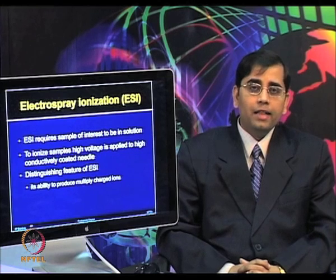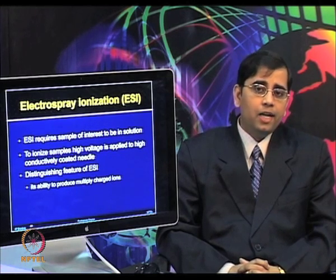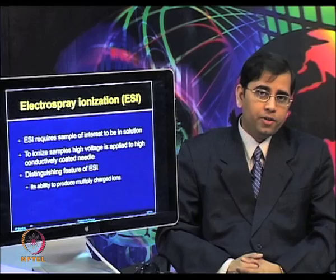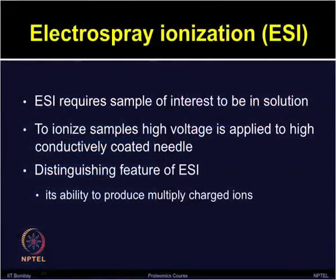ESI requires the sample of interest to be in solution, which is why we can use in-line separation with liquid chromatography. To ionize the samples, high voltage is applied to a highly conductive coated needle. This voltage results in the sample becoming charged, either positive or negative. Positive ions are primarily used for the analysis of proteins. The distinguishing feature of electrospray ionization includes its ability to produce multiple charged ions. The number of charges accepted by a particular molecule depends on its basicity and its size.